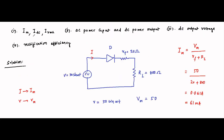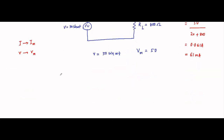Next, we determine the DC value of the current, also called the average value. For half wave rectifiers, it is given by Idc = Im / π. So Idc = 61 milliampere / π = 19.4 milliampere. This is the DC average value of the rectifier current.